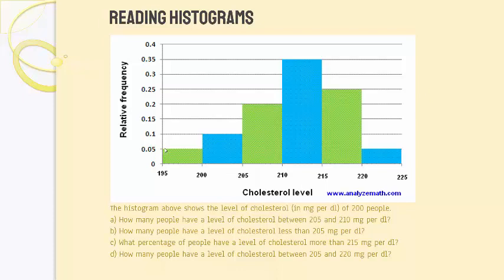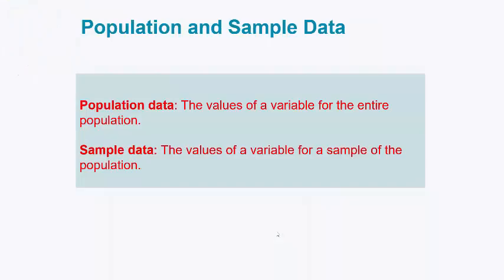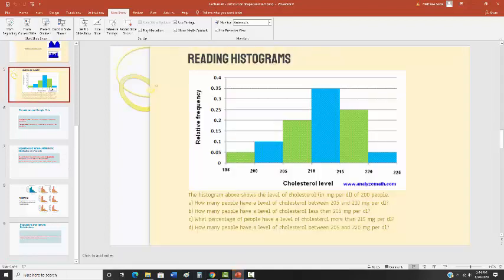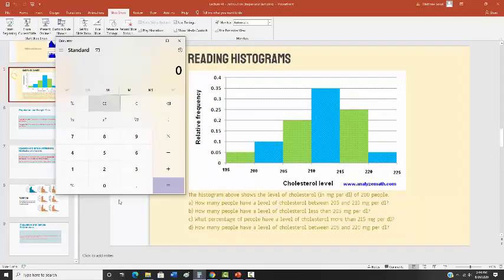You have to be careful here — you need to ask yourself what type of histogram this is. It's a relative frequency histogram, so these values are not counts, they are relative frequencies. The first question is: how many people have a cholesterol level between 205 and 210? That's represented by the green bar, which goes up to about 0.2 — a proportion of 20%. So we take 0.2 times 200, which equals 40 people.